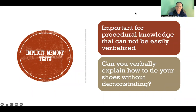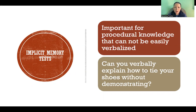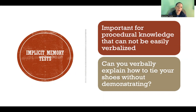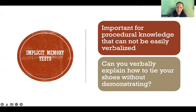Implicit memory tests are important for procedural knowledge — where we can't necessarily verbalize that knowledge or explicitly answer a question, but where we should be able to demonstrate a task. So we would use implicit memory tests in that case — for example, demonstrate how to do a tennis serve or demonstrate a dance routine. These are things that are implicit, more based on your procedural memory as opposed to semantic.